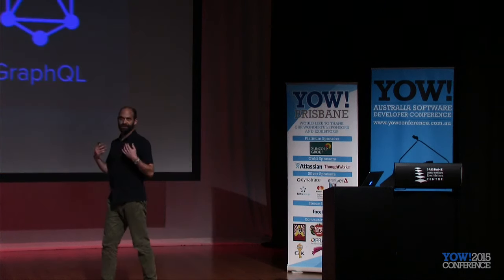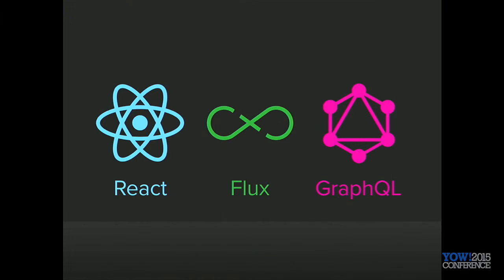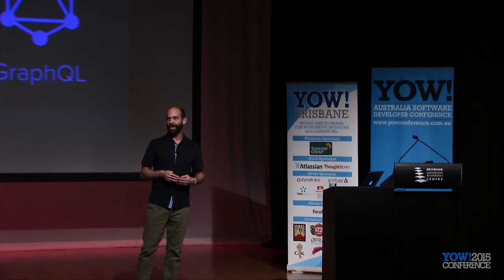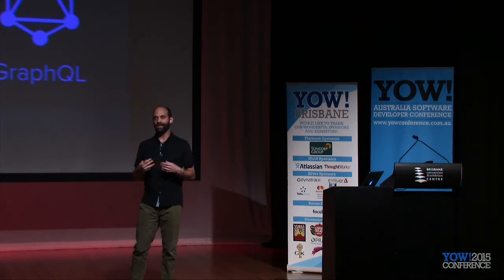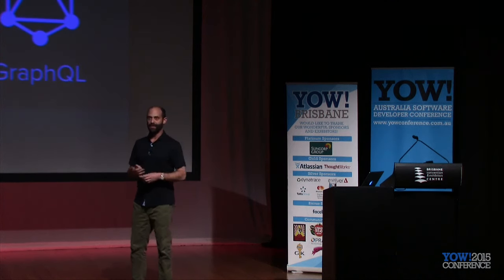Facebook product infrastructure is responsible for some of these open source technologies that you may have heard of. React, I think a lot of people have heard of. Flux is this architectural pattern that has been referenced a few times at this conference. GraphQL is something very new that we put out there that we use internally. Product infrastructure is also responsible for some lower-level stuff — the JavaScript typing library Flow, the internal application layer which we write in a variant of PHP we call Hack, some low-level mobile infrastructure, and a lot of centralized UI component work.